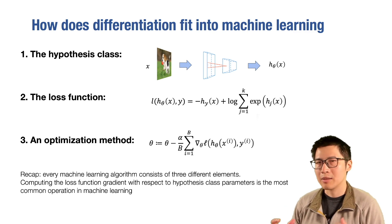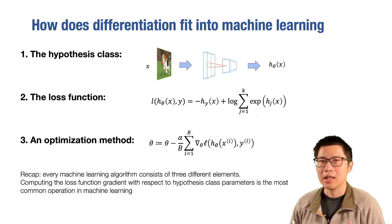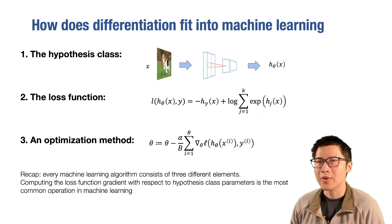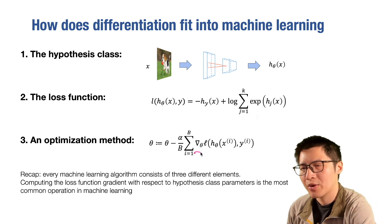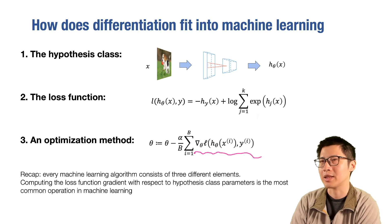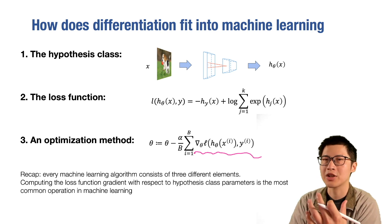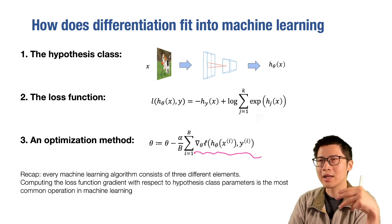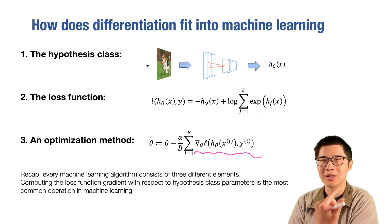For a given loss function, we still need to find a good theta that minimizes it. That's where the third perspective comes in: the optimization method. Most deep learning optimization algorithms take the form of stochastic gradient optimization. We try to compute the gradient of the loss function with respect to the parameter theta, and that gradient direction helps us — it increases the loss by a tiny bit, and our goal is to decrease it.